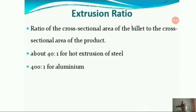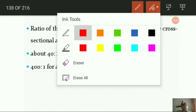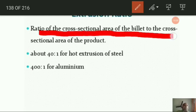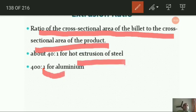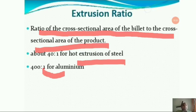Extrusion ratio is very important — this is likely to appear in objective questions. The extrusion ratio is the ratio of the cross-sectional area of the billet to the cross-sectional area of the product. It represents how much the cross-section was before versus after extrusion. For hot extrusion of metals, it is about 40:1. For aluminium, it is about 10 times higher than for steel, giving an extrusion ratio of approximately 400:1.